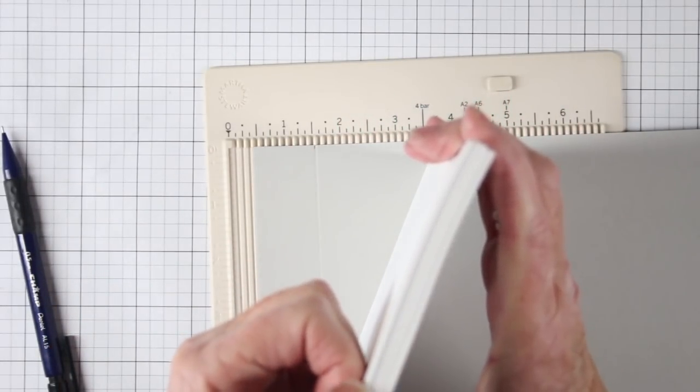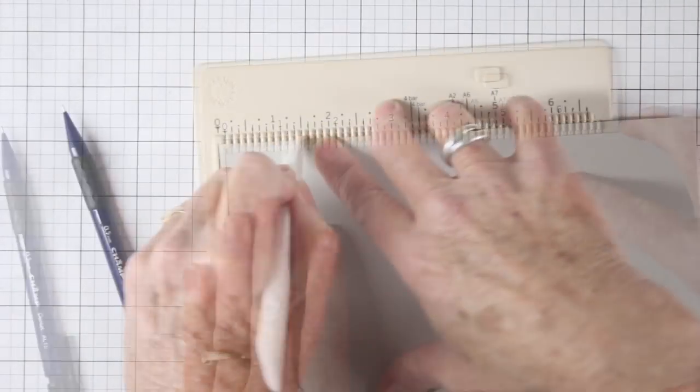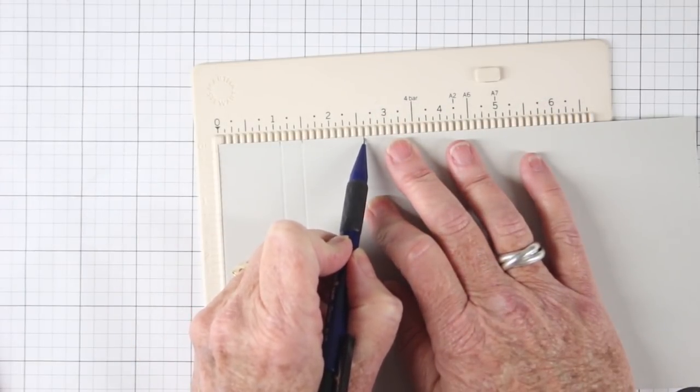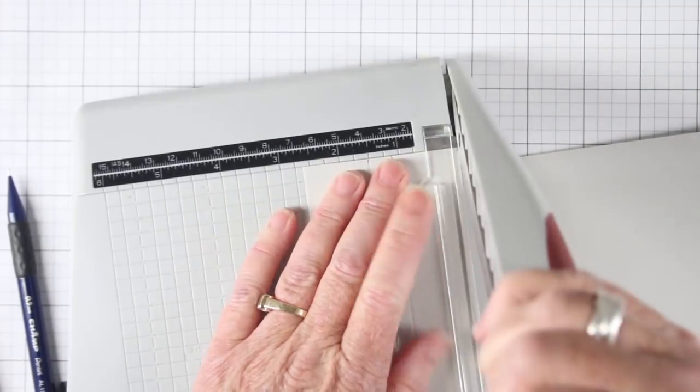My next score line will reflect the depth of the book and I have measured this out and it's three eighths of an inch. And before I remove my paper from my score tool I want to mark where I need to cut the end for my cover wrap.